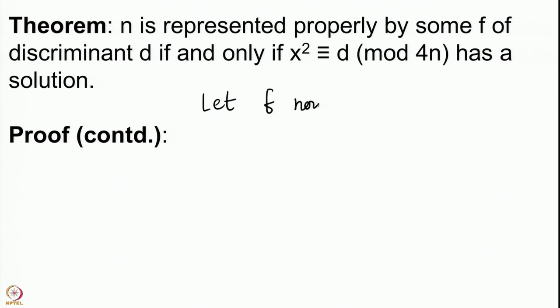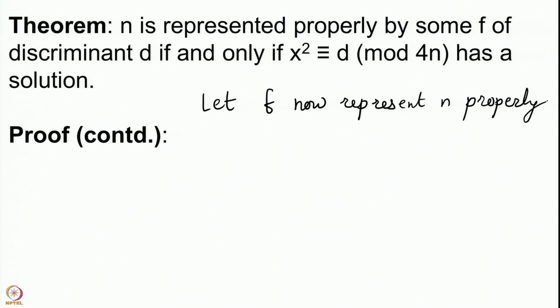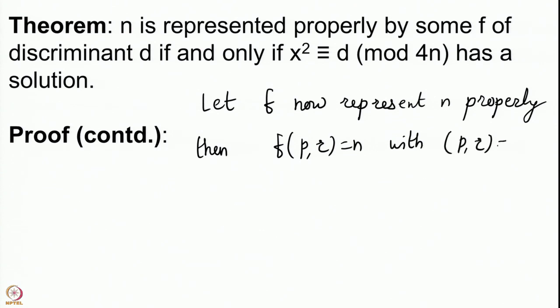Now we will prove the other direction: we start by assuming that f represents n properly and need to prove that the discriminant d of f has to be a square modulo 4n. So let f represent n properly; then f(p, r) = n with gcd(p, r) = 1.